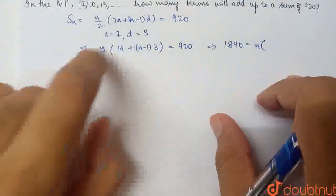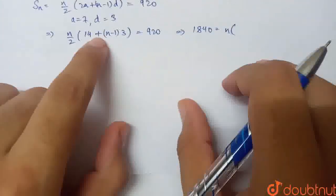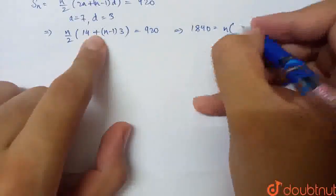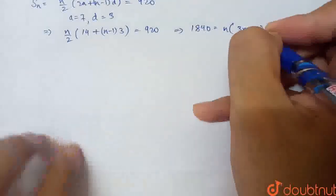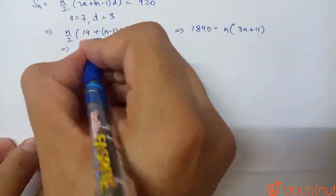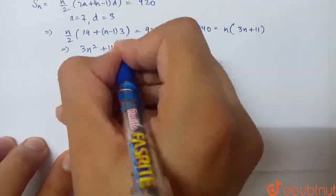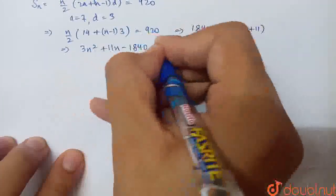Opening up, 3n minus 3. So 14 minus 3 is 11, so 3n plus 11. If I simplify this, 3n² + 11n - 1840 = 0.